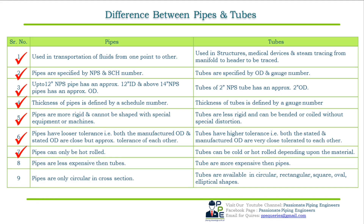When it comes to cost, pipes are less expensive than tubes, while tubes are more expensive than pipes. As per shapes, pipes are only circular in cross-section, whereas tubes are available in circular, rectangular, square, oval, and elliptical shapes.